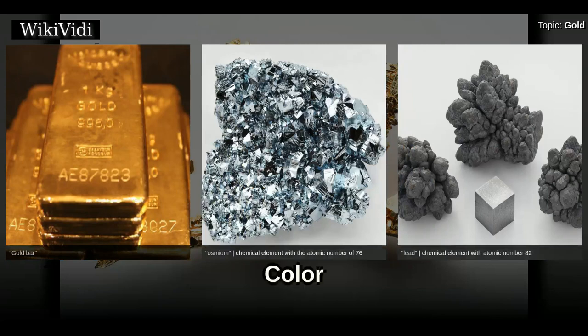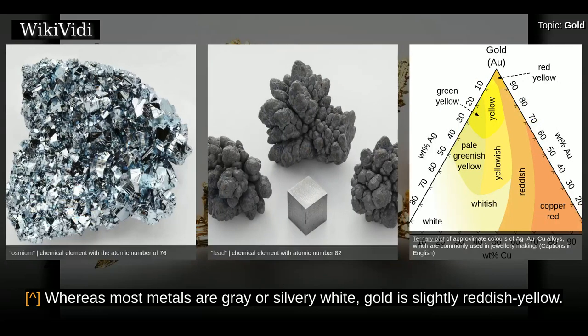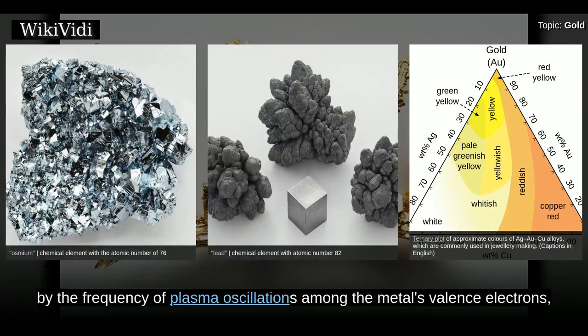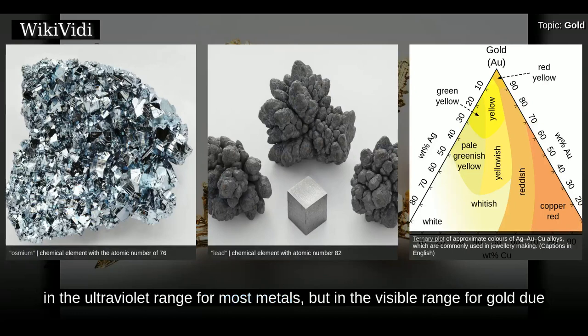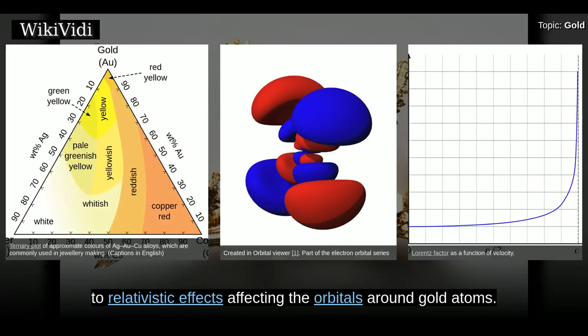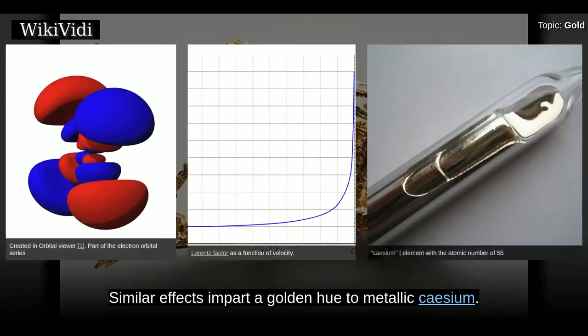Whereas most metals are gray or silvery white, gold is slightly reddish yellow. This color is determined by the frequency of plasma oscillations among the metal's valence electrons — in the ultraviolet range for most metals, but in the visible range for gold due to relativistic effects affecting the orbitals around gold atoms. Similar effects impart a golden hue to metallic cesium.